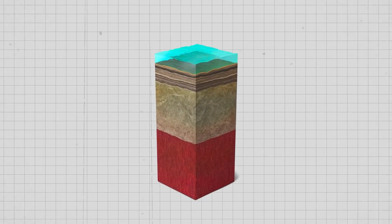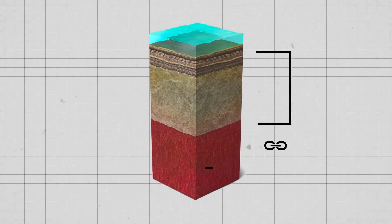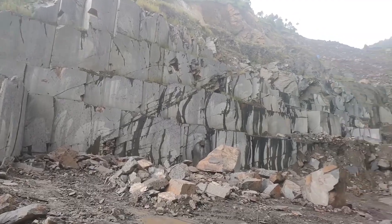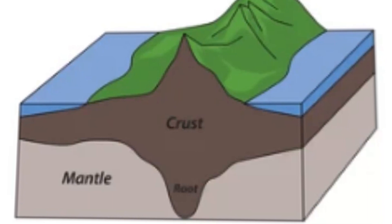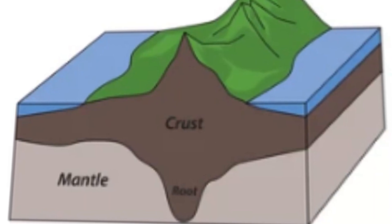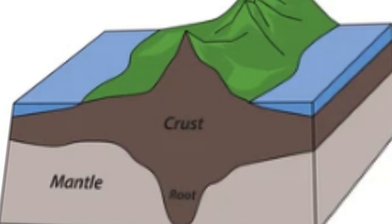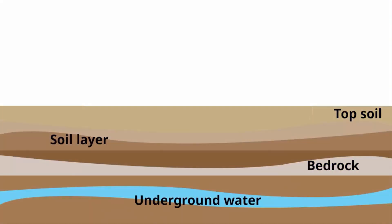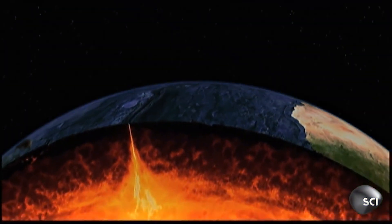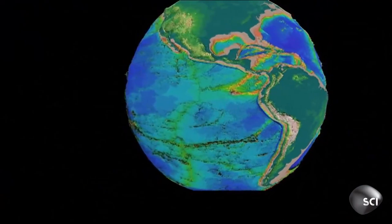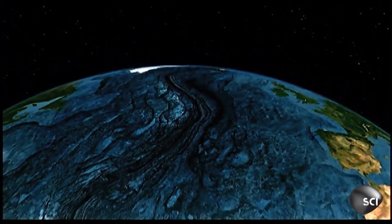Another critical factor is the composition and thickness of Earth's crust. Continents consist of lighter, less dense rocks like granite, allowing them to float higher on the denser mantle beneath. This process, known as isostasy, helps maintain the balance between land and water on Earth's surface. Ocean basins also play a significant role in determining the amount of water on Earth's surface. The size and depth of ocean basins control the volume of water they can hold, and tectonic processes such as seafloor spreading and subduction contribute to the formation and expansion of ocean basins, which directly impacts the distribution of water on Earth.